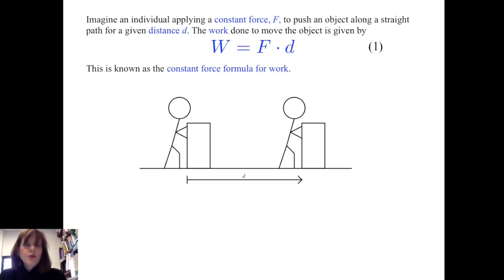Imagine an individual applying a constant force F to push an object along a straight path for a given distance D. The work done to move the object is given by W = F · d. This is known as the constant force formula for work. And here we see a picture of a person moving an object along a straight path.